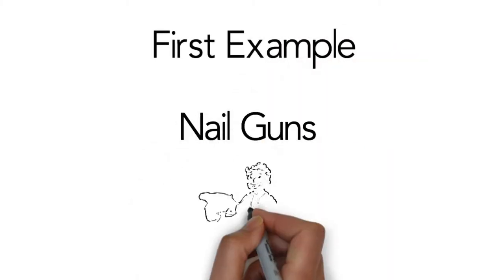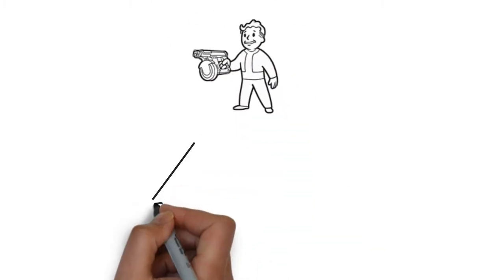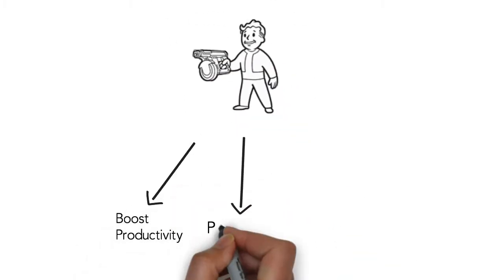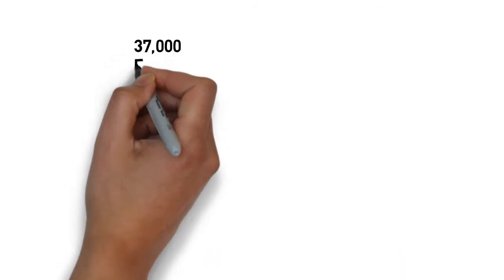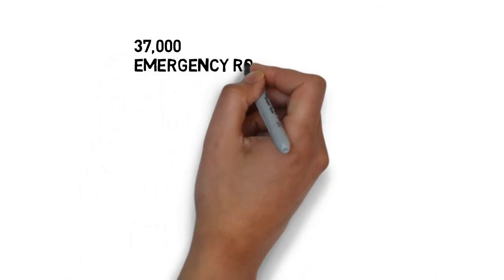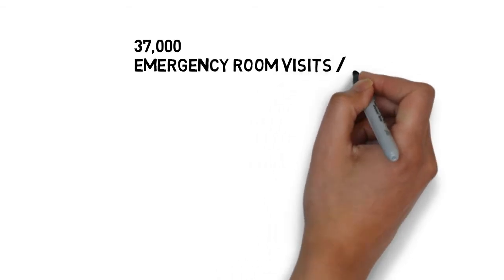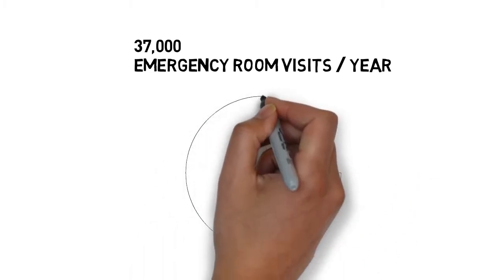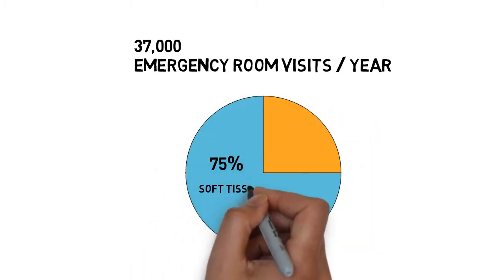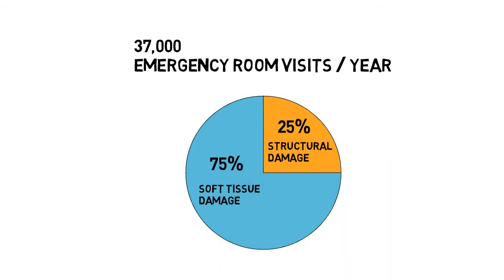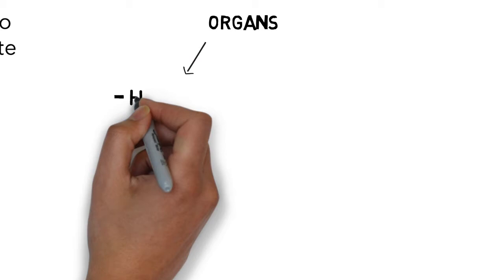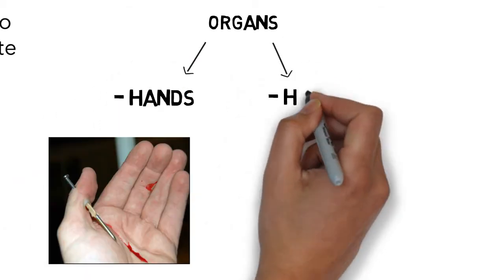The first example is the use of a nail gun. Nail guns boost productivity for nailing tasks and are powerful yet easy to operate. They are also responsible for an estimated 37,000 emergency room visits each year. Injuries with nail guns happen in many ways, such as the unintended nail discharge from a double fire. 75% of nail gun injuries involve soft tissue damage, while the other 25% involve structural damage like fractures. 65% of nail gun injuries occur in the hand, but other common sites include the head, neck, chest, and abdomen.